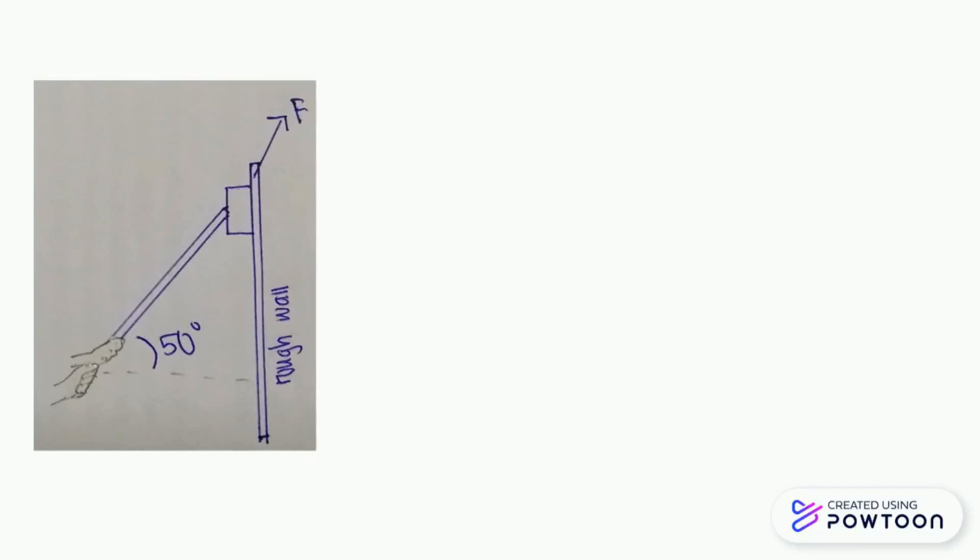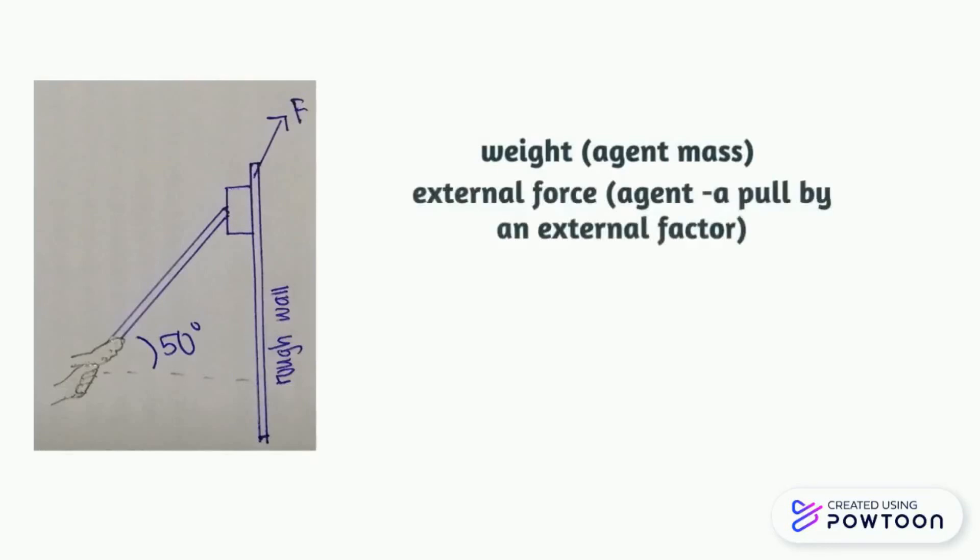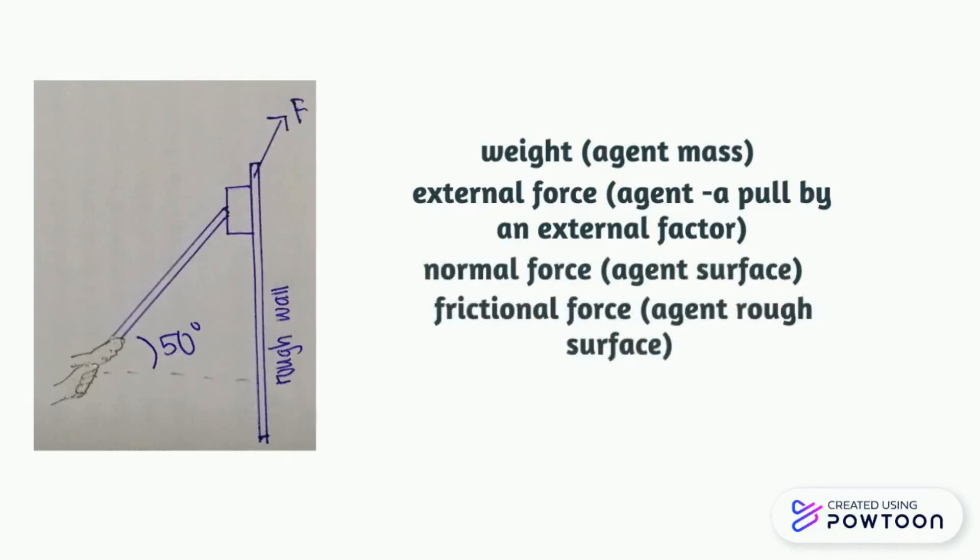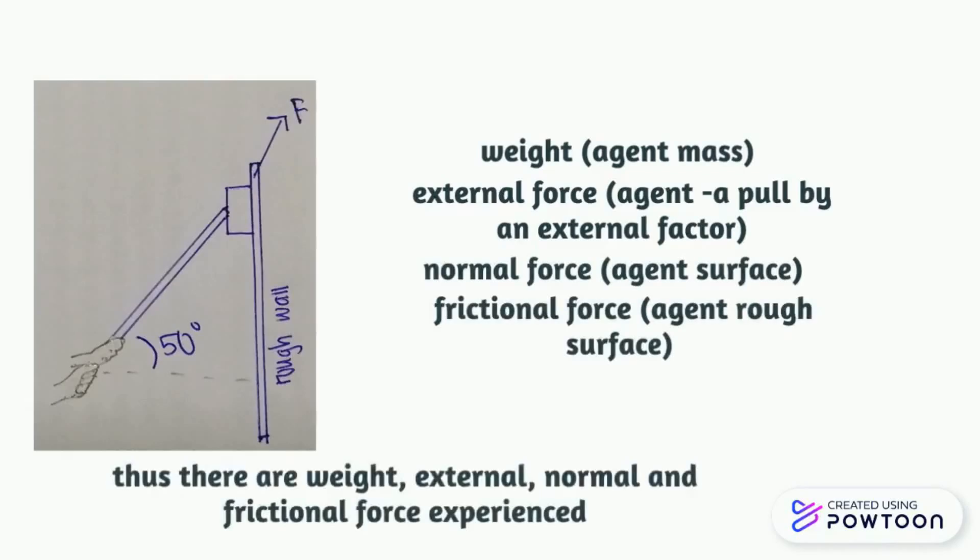The object is being pushed up a rough wall. The object has a mass which leads to the weight force. It is being pushed against the wall, so it is going to experience external force. It is in contact with a surface, so it is going to experience normal force. And lastly, due to the surface being rough, there is presence of frictional force.